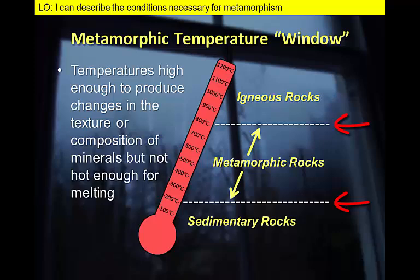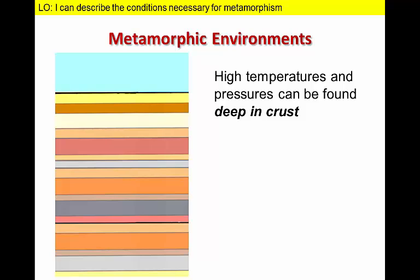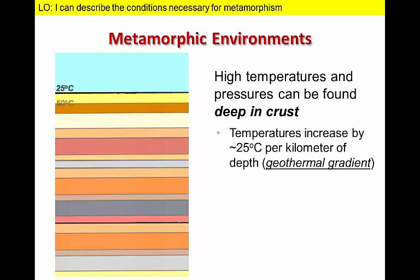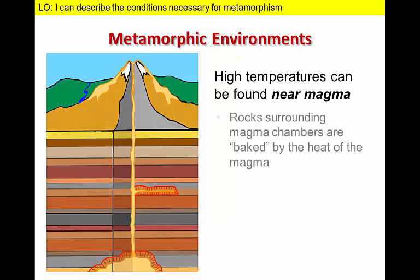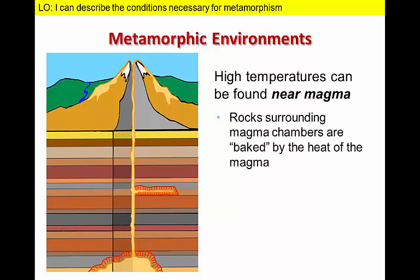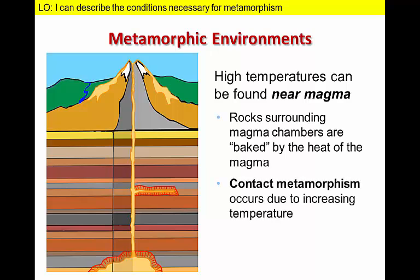These conditions typically occur at depths of several kilometers below Earth's surface, in close proximity to a heat source such as a magma chamber, or in association with plate boundaries. Assuming a standard geothermal gradient, the temperatures necessary for metamorphism would typically be found at depths of 7 kilometers or greater. Magma exists within Earth's crust at temperatures of over 1200 degrees Celsius, and these very hot materials bake the surrounding rocks via a process known as contact metamorphism.